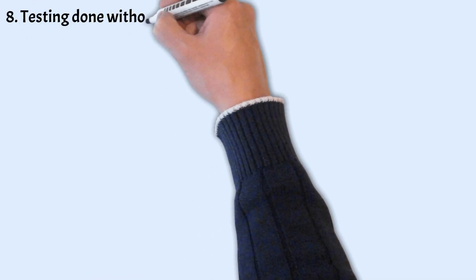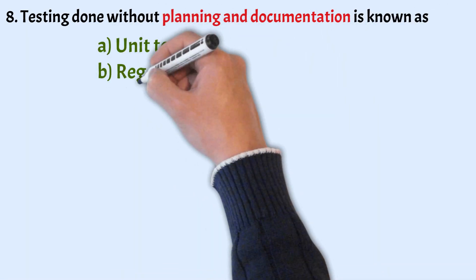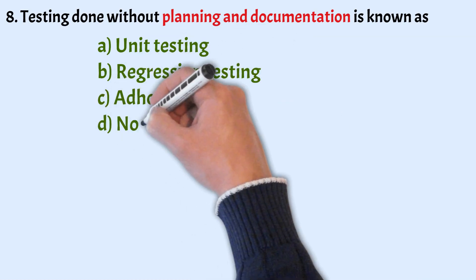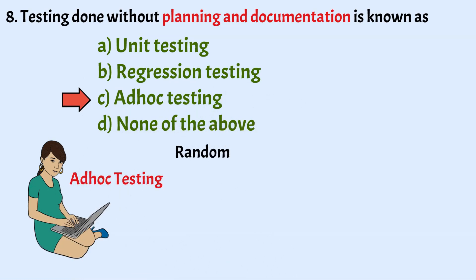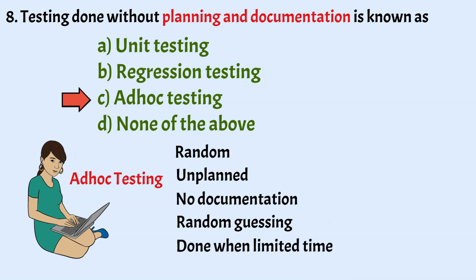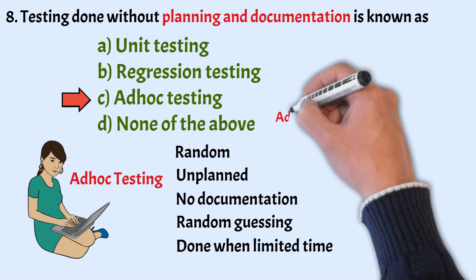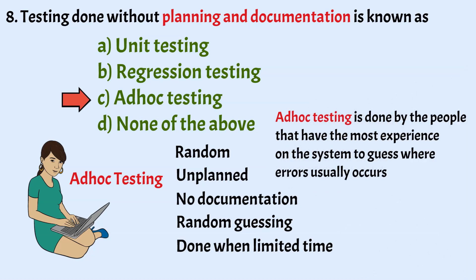Next question: Testing done without Planning and Documentation is known as? Options: Unit Testing, Regression Testing, Adhoc Testing, and None of the above. The correct answer is Option C, Adhoc Testing. Adhoc Testing is done randomly and is usually an unplanned activity that doesn't follow any documentation. The main aim is to find defects by random guessing, and it is done when there is limited time for thorough testing. Adhoc Testing is done by people with the most experience on the system, to guess where errors usually occur.